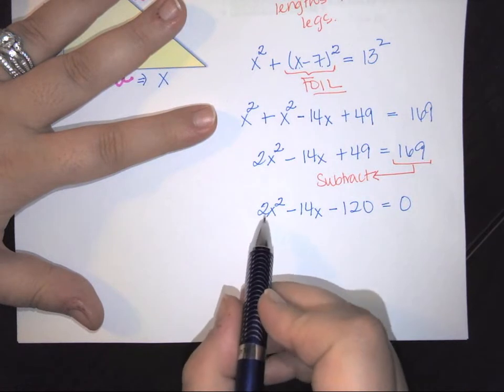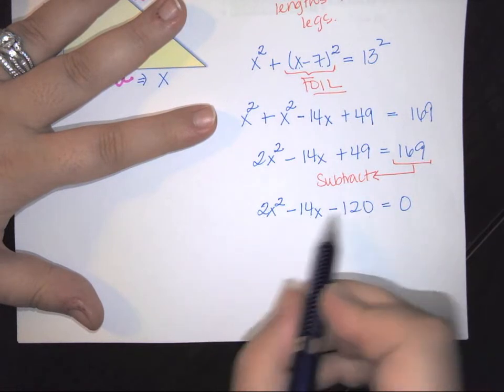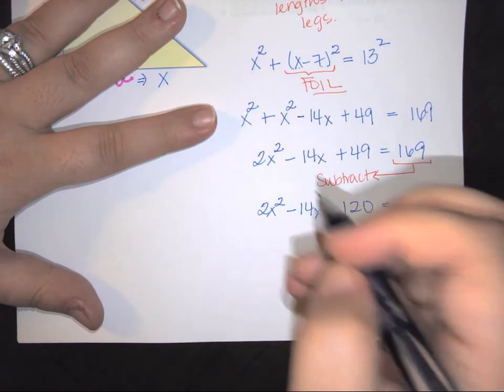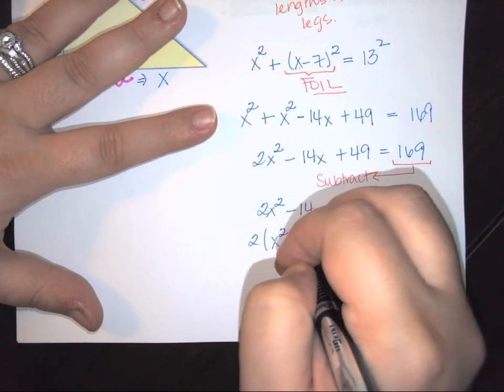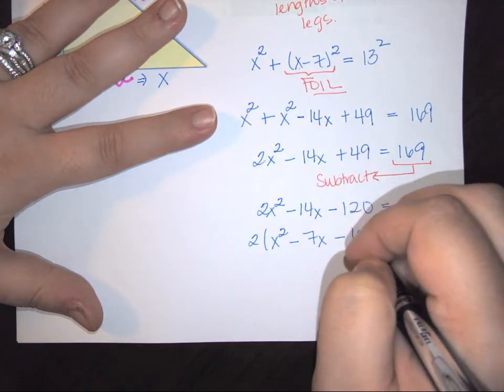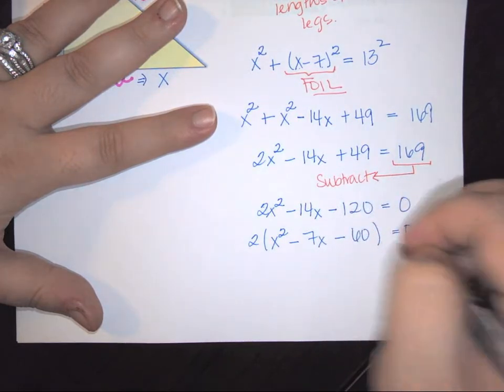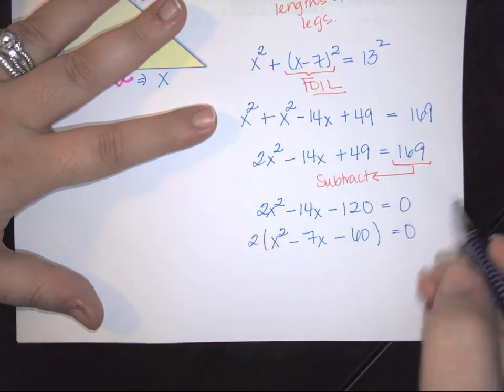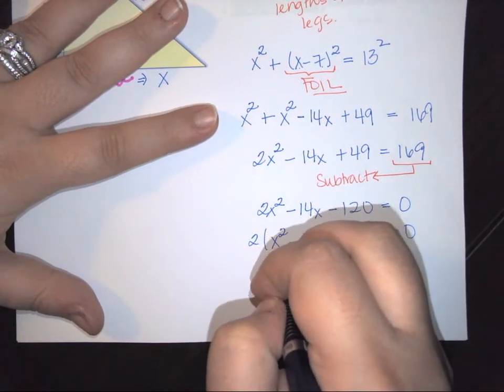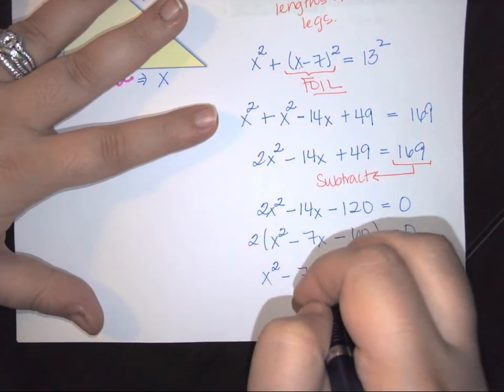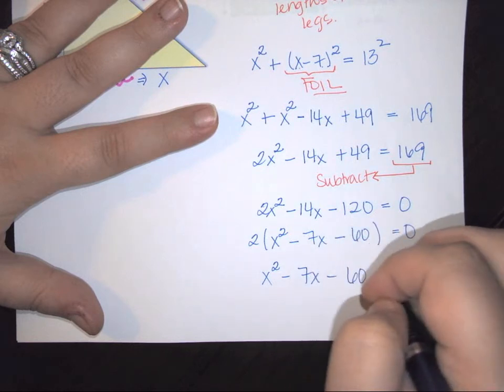And when I do so, I'm going to get 2x squared minus 14x minus 120 is equal to zero. Now, I have this 2 here and notice each of these terms is even, so I can pull the 2 out. So when I pull that 2 out, I'm left with x squared minus 7x minus 60 equals zero. I can divide that 2 completely out of the system and so I have x squared minus 7x minus 60 equals zero.